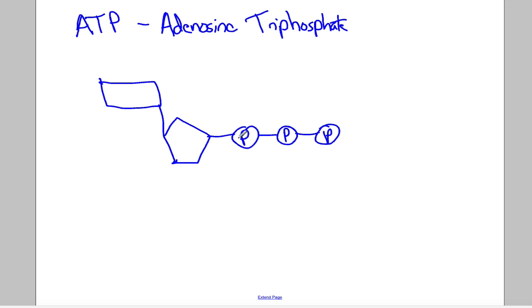I'm trying to draw it now: phosphate, phosphate, phosphate - there's three of them, so it's triphosphate. That's ribose, and that's adenine. So all of that together is adenosine triphosphate.